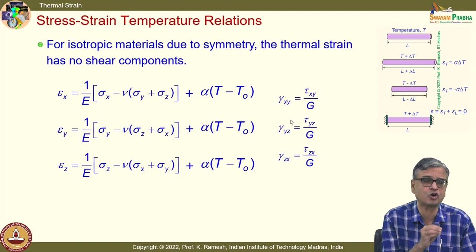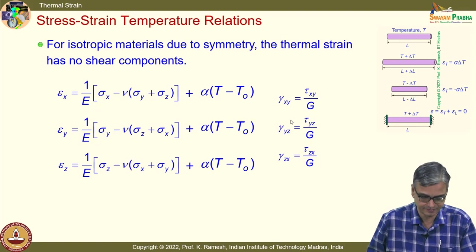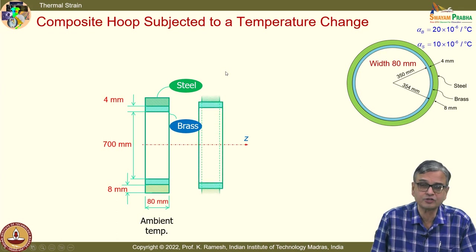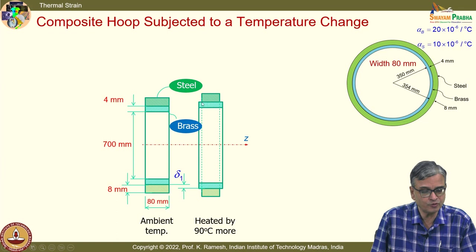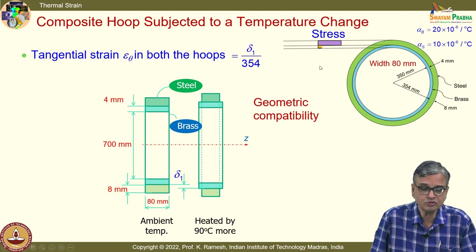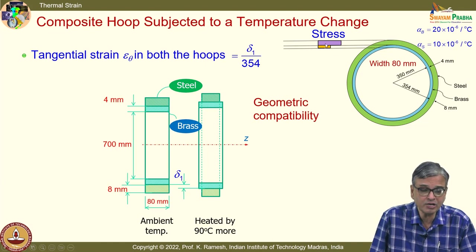Our focus in this course is confined to isotropic materials. We also looked at what happens to a hoop subjected to a temperature change. We brought in geometric compatibility — the tangential strain should be identical at the interface. We determined the stresses and plotted them. You maintain compatibility of strain at the interface, but when you plot stress, stress can be discontinuous.